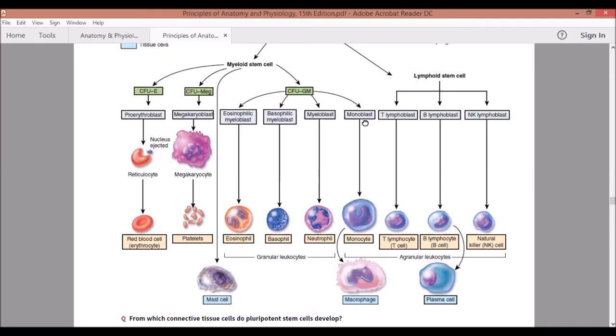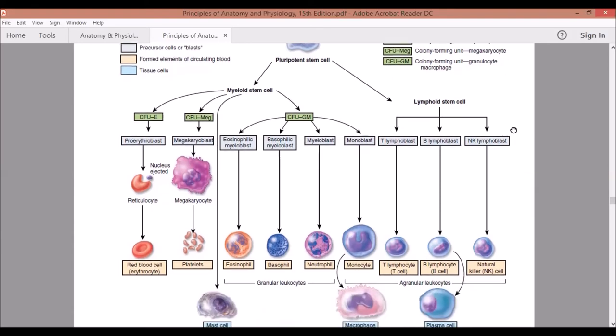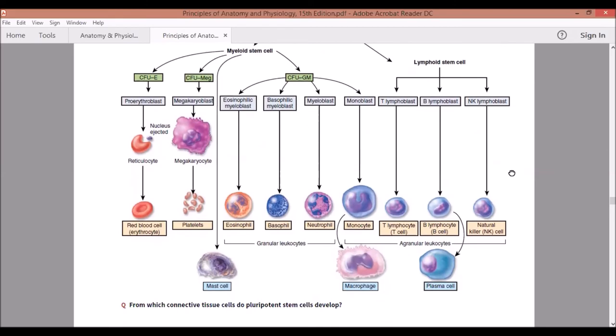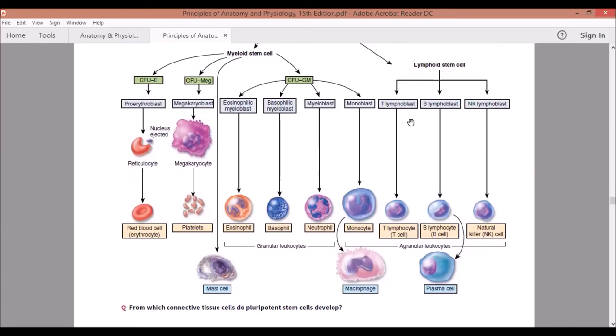Now going to your lymphoid lineage. By the name itself, lymphoid, actually sila yung mga pinaka-involved, or sila talaga yung involved dun sa immunity ng katawan mo - adaptive immunity ng katawan mo. The actual maturity of these kinds of cells will be better discussed in your immune system anatomy and physiology, but it will suffice for you to know that the lymphoid stem cells give rise to your lymphoblasts: T lymphoblast, B lymphoblast, and your natural killer lymphoblasts.